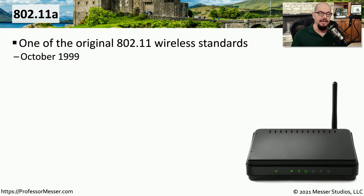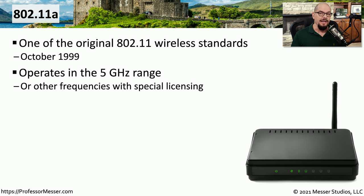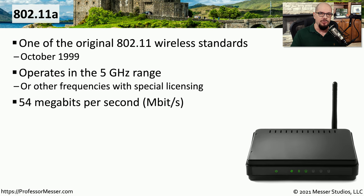In October of 1999, the very first 802.11 standards were released: 802.11a and 802.11b. The 802.11a standard operates in the 5 gigahertz range, although in special situations there are other frequencies you're able to use, but the vast majority of 802.11a will always be at 5 gigahertz. This 802.11a standard operates at 54 megabits per second, which was quite a bit more than the 802.11b standard released at the same time.